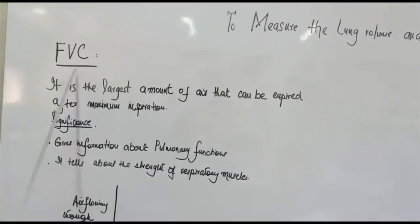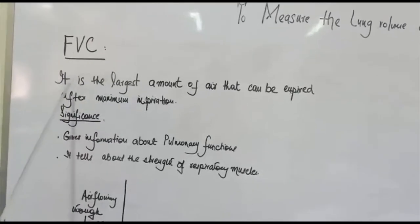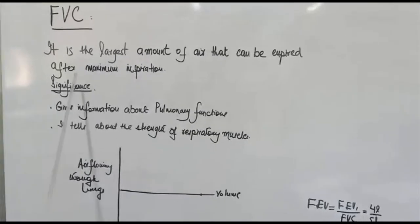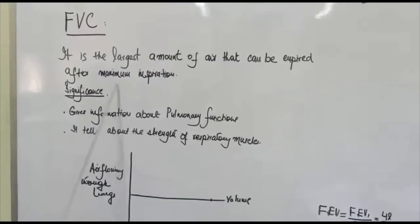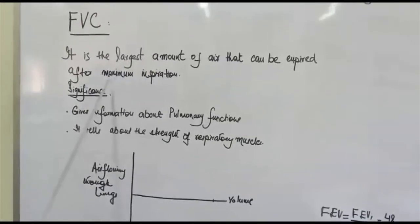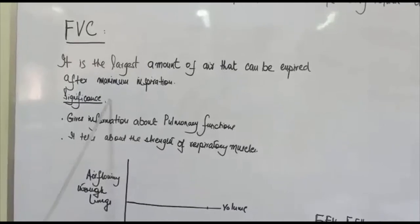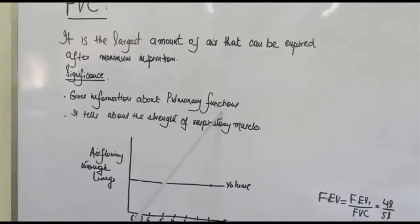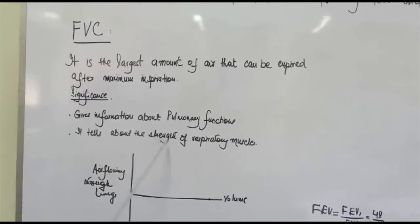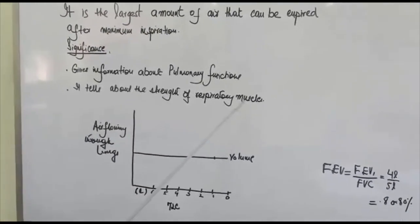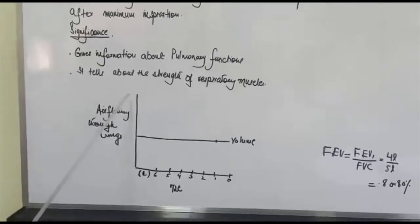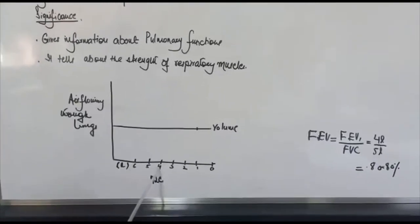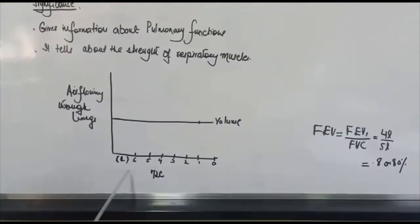The significance of forced vital capacity is that it gives information about pulmonary functions and tells about the strength of the respiratory muscles. Looking at this graph, the volume of air in the lungs — 6 liters is the maximum lung capacity. Along the x-axis is time and along the y-axis is volume.